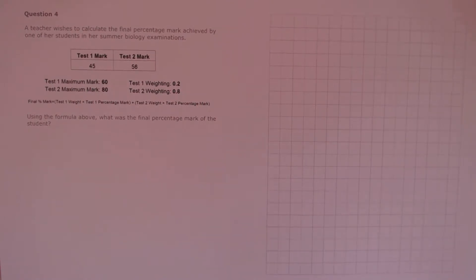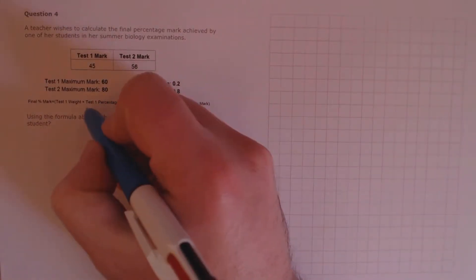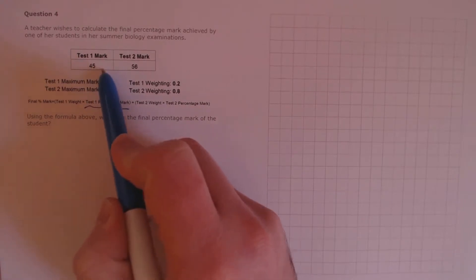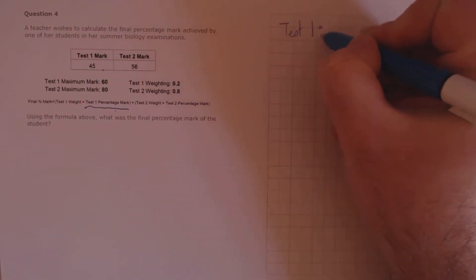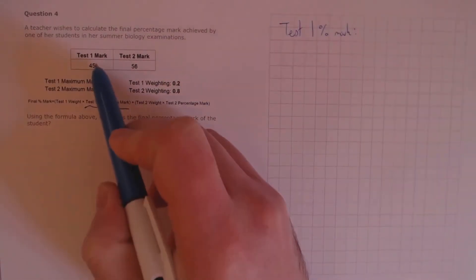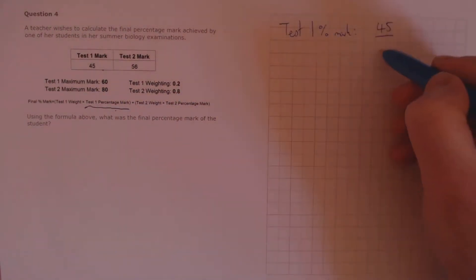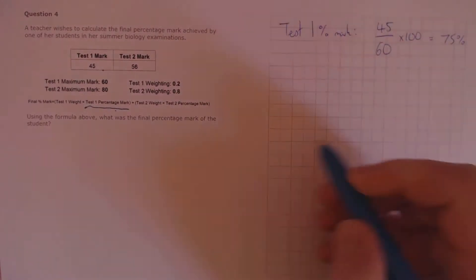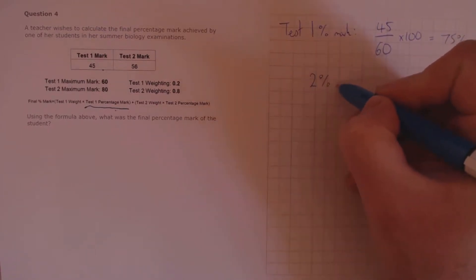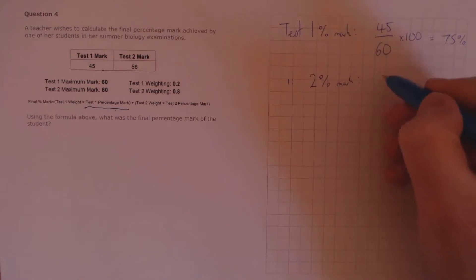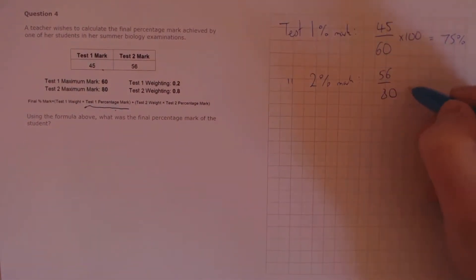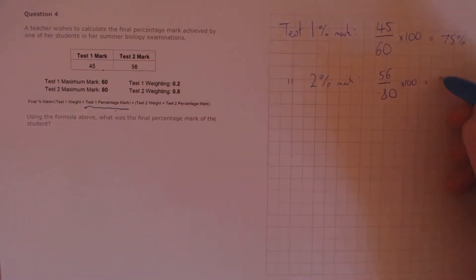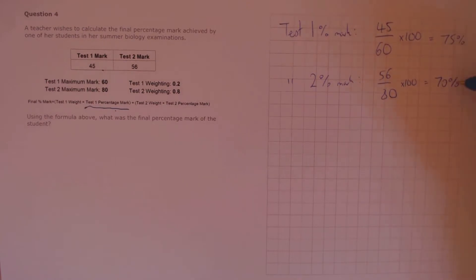Question 4. A teacher wishes to calculate the final percentage mark achieved by one of her students in her summer biology examinations. Using the formula above, what was the final percentage mark of the student? The thing we have to be careful about here is that this formula requires the percentage mark, but we've been given the actual mark. So first, we need to calculate the percentage mark for each test. We take 45, the actual mark, and divide it by the maximum mark of 60, and multiply by 100. 45 over 60 is three-quarters, so that's 75%. We do the same for test 2: 56 over a total of 80, multiplied by 100. 56 over 80 is 0.7, so that's 70%.